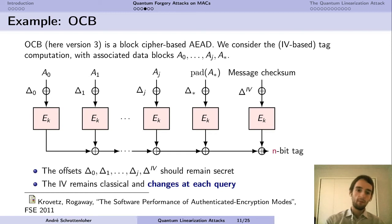So let's take an example. And this would be the tag part, the tag computation in OCB. OCB is a mode in which you do the encryption and also the authentication at the same time. But we only consider here the authentication. So it's based on a block cipher. You have all the associated data blocks which are controlled, they're part of the queries. The n-bit blocks, we absorb them to offset values which are secret values. We encrypt through EK and we absorb everything and then we add a message checksum and we obtain our n-bit tag. So the offsets should be secret and also each time we do a query we change the IV.